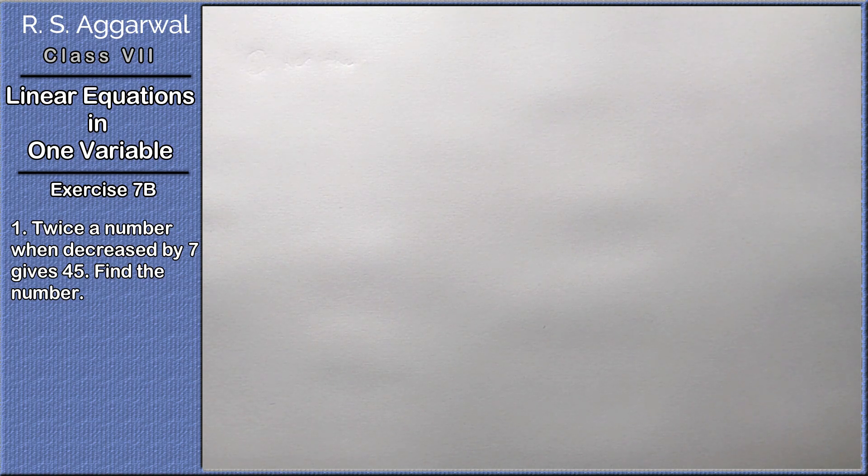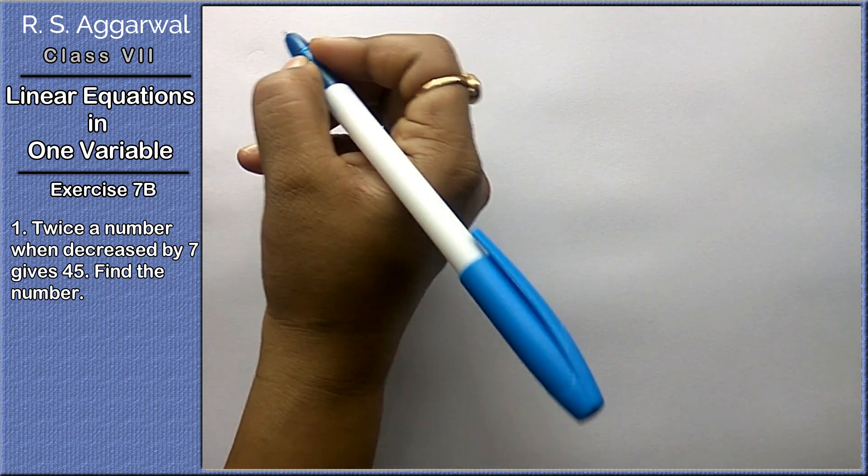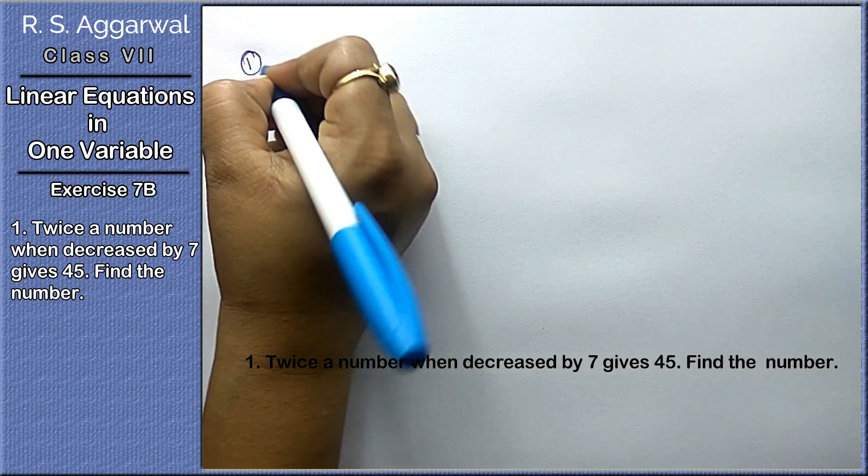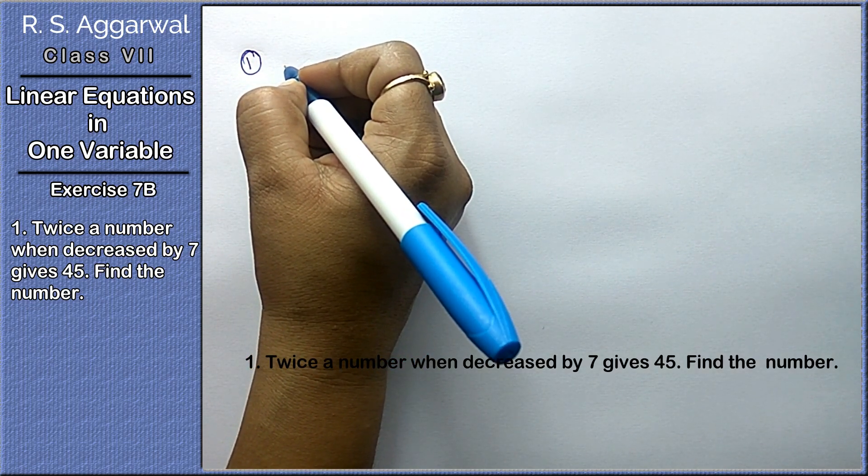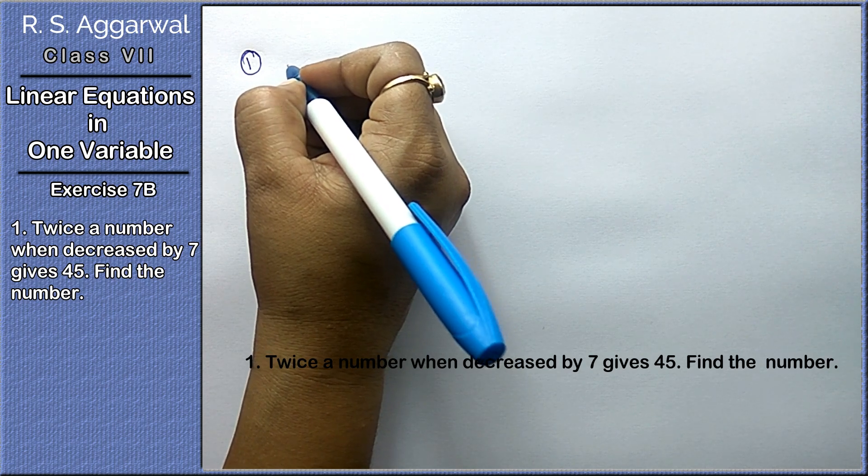Hello friends, welcome to Learn Maths. Today we will do the first five questions of chapter 7, that is linear equations in one variable. First question is: twice a number when decreased by 7 gives 45, find the number.